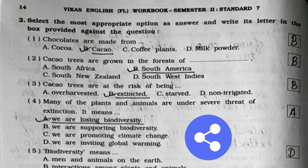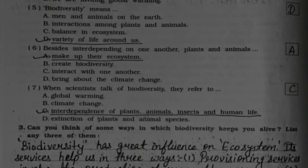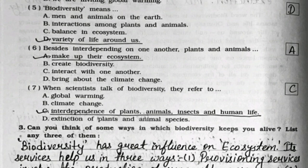Now question number two — MCQs. First: Chocolates are made from — cocoa. Second: Cocoa trees are grown in the forests of South America. Third: Cocoa trees are at the risk of being extincted. Fourth: Many of the plants and animals are under severe threat of extinction — it means option A, we are losing biodiversity. Fifth: Biodiversity means option D, variety of life around us. Sixth: Besides interdepending on one another, plants and animals — option A, make up their ecosystem.